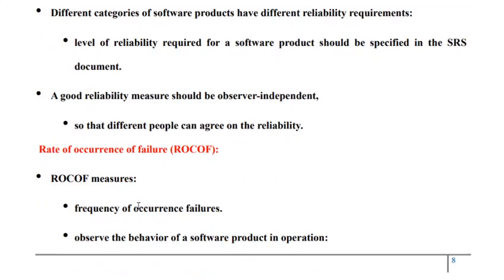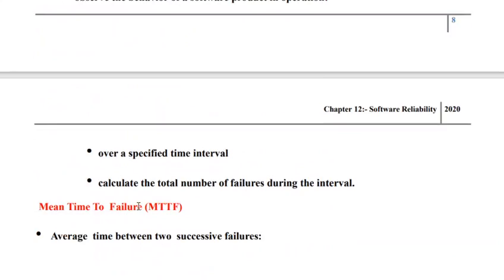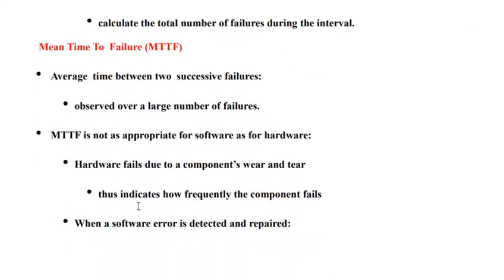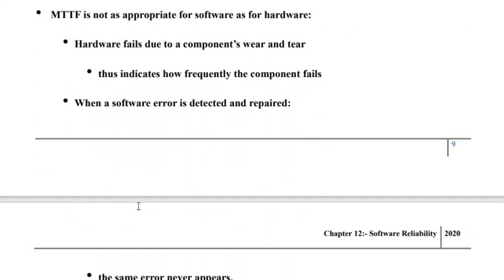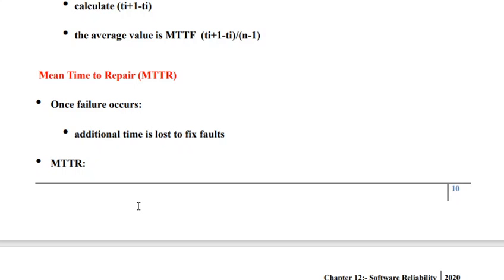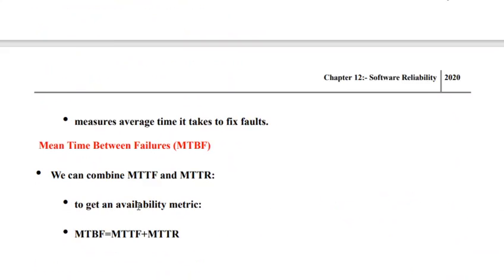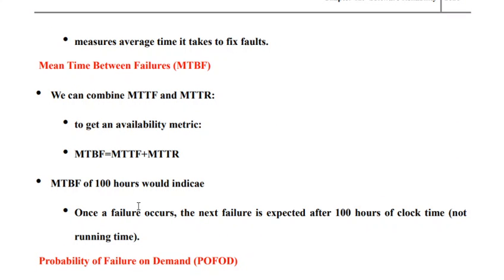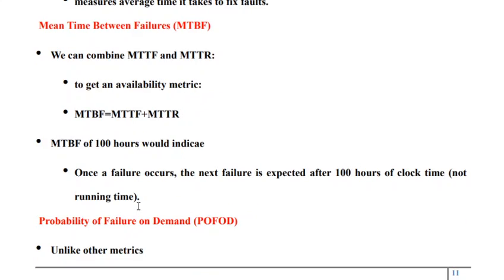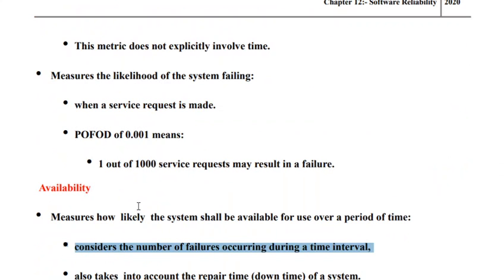So the six important reliability matrices are: rate of occurrence of failure, mean time to failure, mean time to repair, mean time between repair, mean time between failure, probability of failure on demand, and availability. These are very important reliability matrices that one needs to remember whenever we talk about the reliability of a software system.